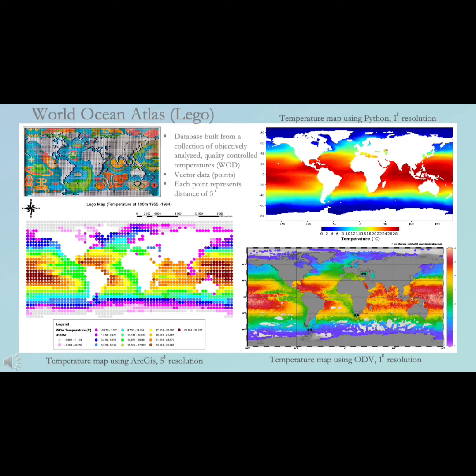A resolution of one degree would have been better, as there would have been more data points, thus a clearer, more accurate map, as can be seen on the Python map. We also made the same map using one degree resolution in ODV, which also incorporates point data as we didn't use the Diva gridding system. At one degree resolution, the data points overlap and provide a clearer view of sea surface temperature.